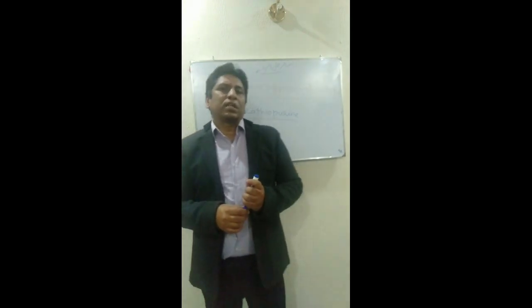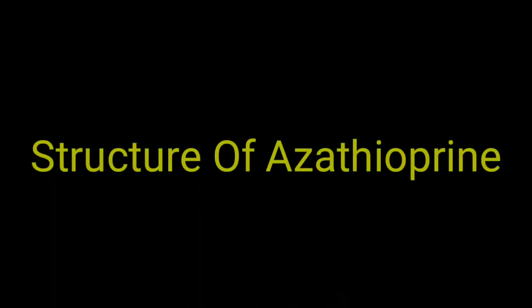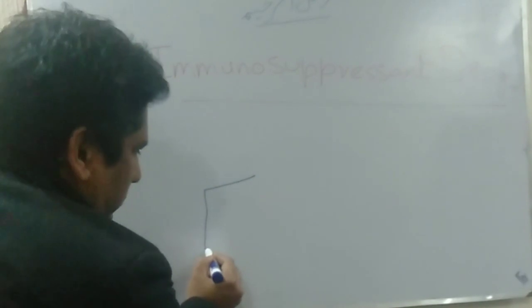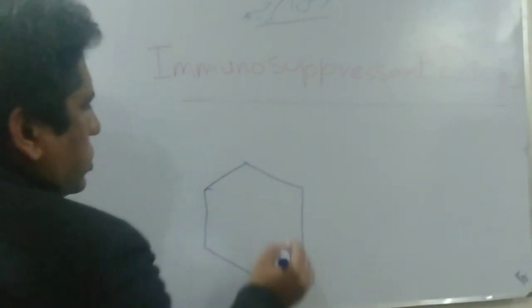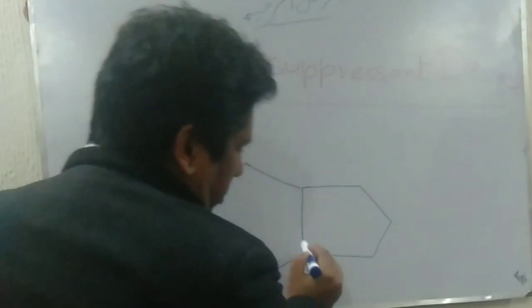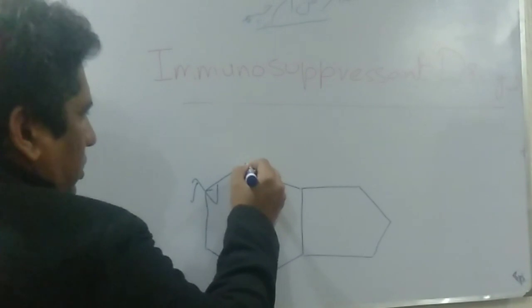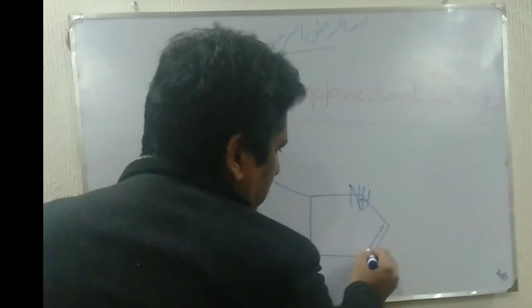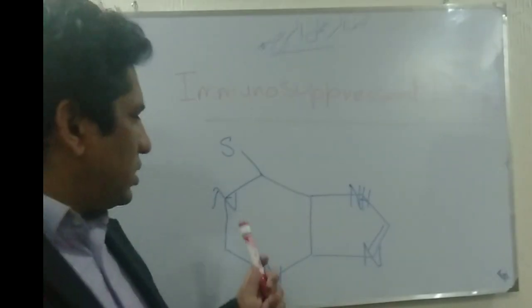Azathioprine dissolves in alkaline solution where it hydrolyzes to 6-mercaptopurine. The structure of azathioprine consists of a purine ring with three double bonds present in the purine ring.